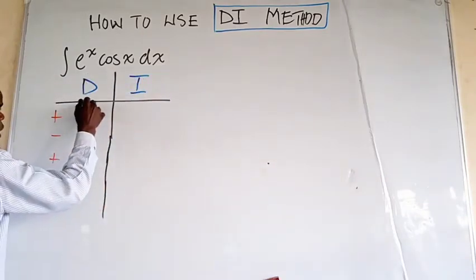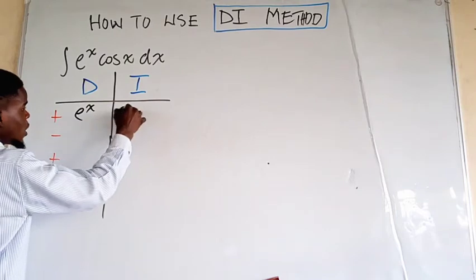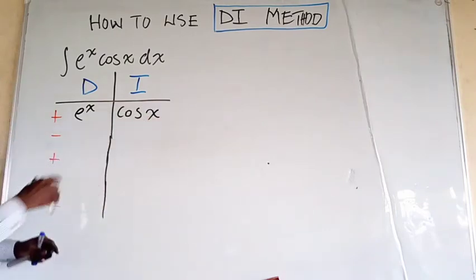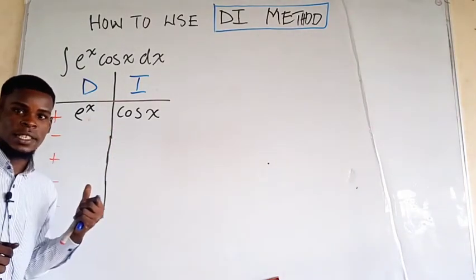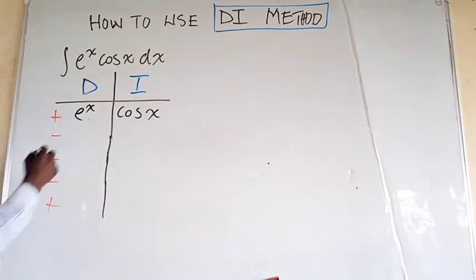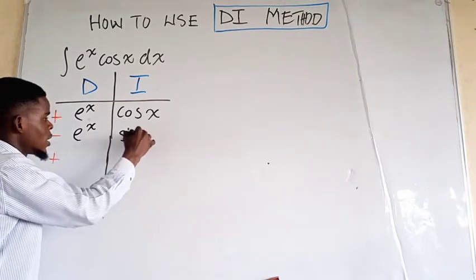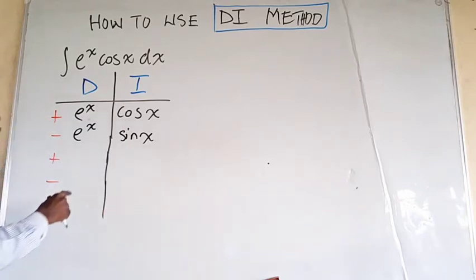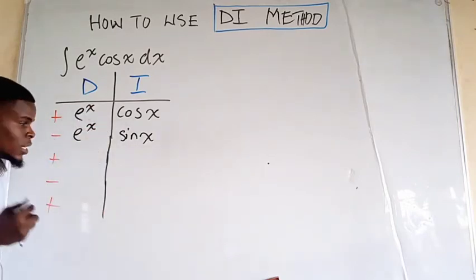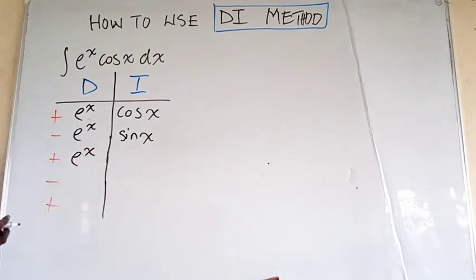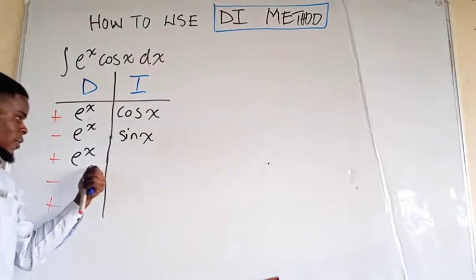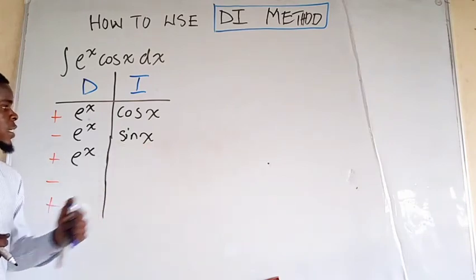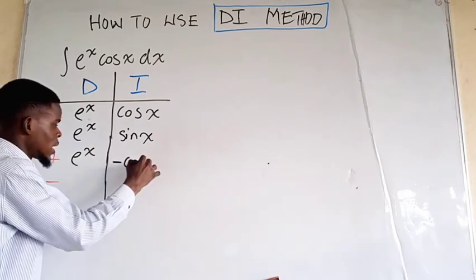I will put down e to the power of x — let's integrate that one — and I put down cosine of x — let's differentiate this and integrate this one. So we differentiate e to the power of x, we still have e to the power of x. We integrate cosine of x, we have positive sine of x. Now we go ahead and differentiate e to the power of x again — we get the same thing, since the exponential function when differentiated remains itself. So we integrate sine x: the integral of sine x is negative cosine of x.